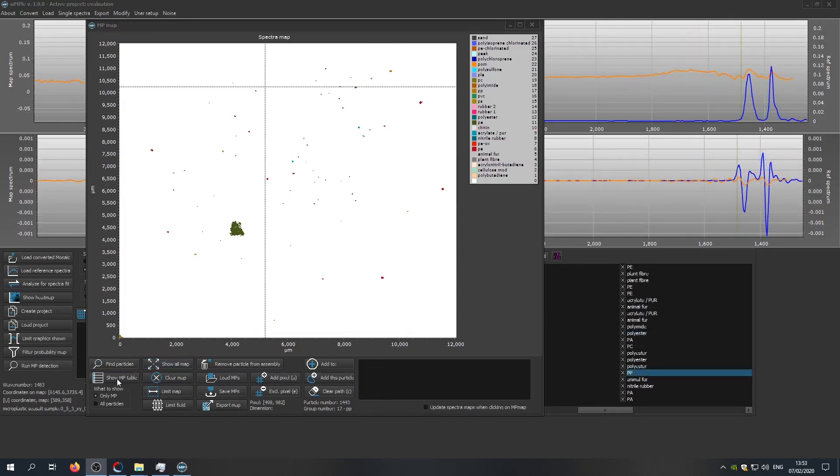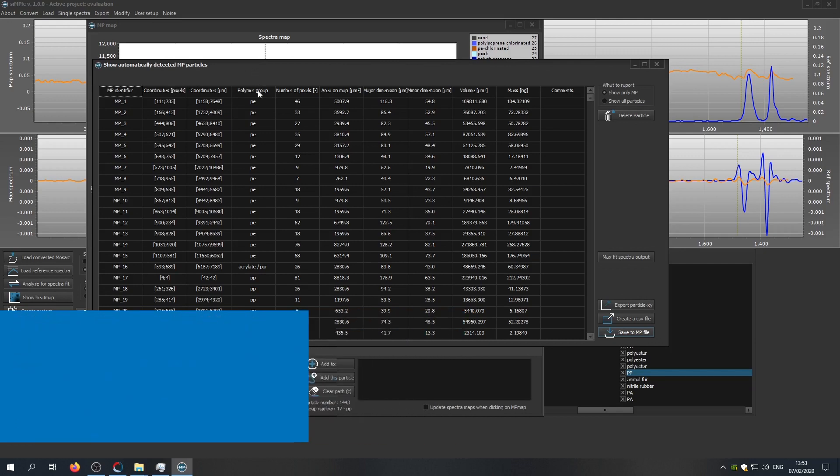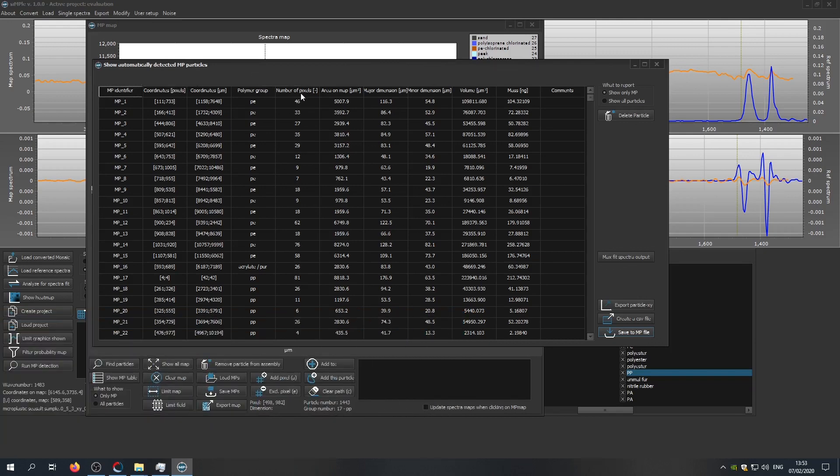By clicking on show MP table, we can access a list of all particles that have been found. The information available includes the coordinates, the polymer identity, the number of pixels, which corresponds to an area on the map, the major and minor dimensions of the particle, as well as its volume and its estimated mass.